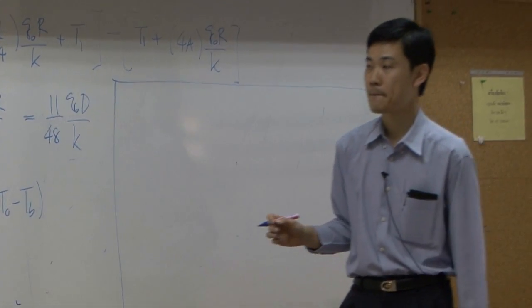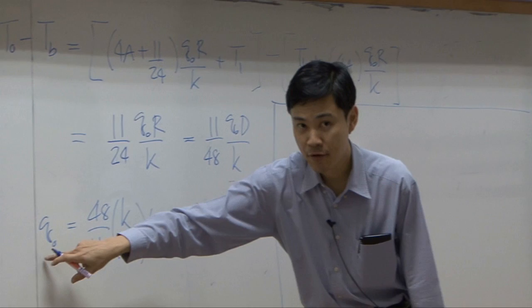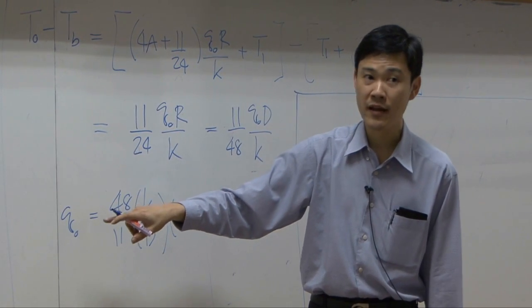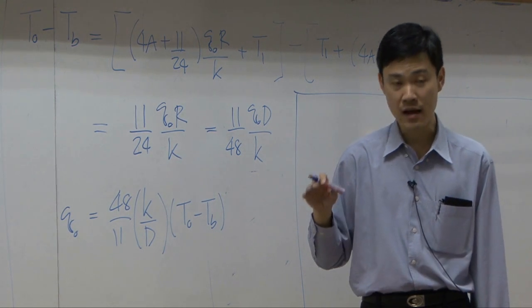Now, Q here is a heat flux. It is amount of energy per unit area per unit time.